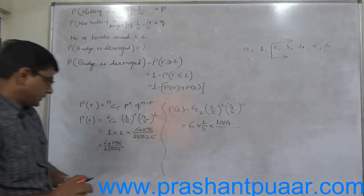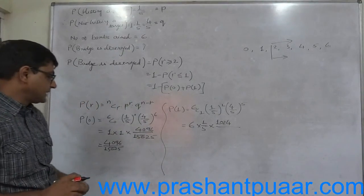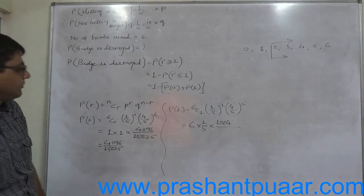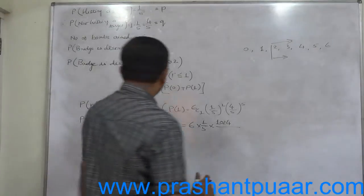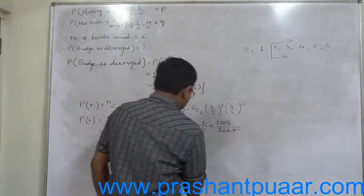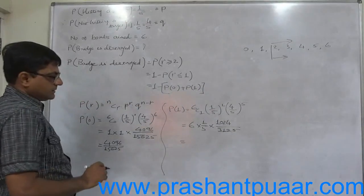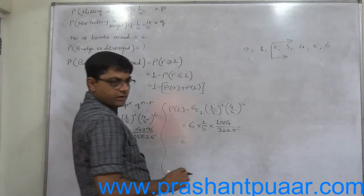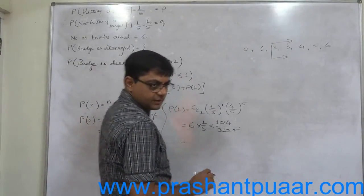Now 5 raise to 5. If 5 raise to 6 is 15625, 5 raise to 5 must be 15625 divided by 5, which is 3125. So this is 6144 divided by 15625.